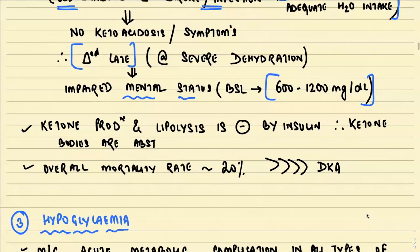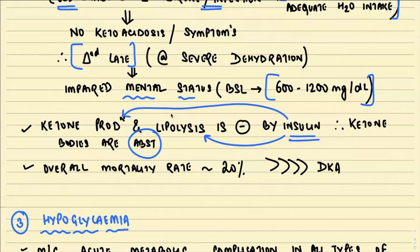Ketone production and lipolysis are inhibited by insulin. Therefore, ketone bodies are absent in HHS. In type 2 diabetes mellitus, although cells are resistant to insulin, the insulin level in circulation is actually high. This excessive amount of insulin inhibits fat breakdown and inhibits ketone body production. Therefore, ketoacidosis is not seen in type 2 diabetes mellitus.